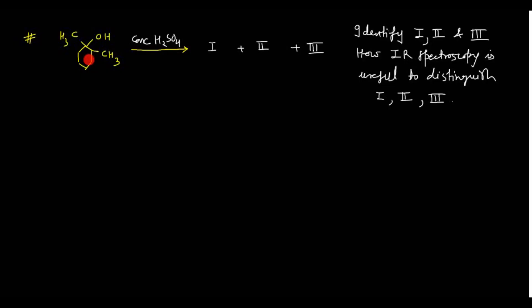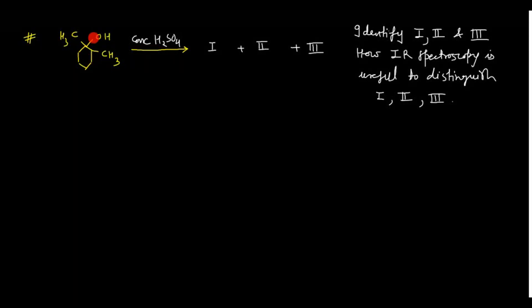Hello friends, welcome again to the Tetrahedron Chemistry Classes. Today I am going to discuss a problem based on reaction mechanism and IR spectroscopy. The question gives a compound which is a tertiary alcohol, treated with concentrated sulfuric acid to give three products — one, two, and three. We need to identify products one, two, and three, and understand how IR spectroscopy is useful to distinguish them.